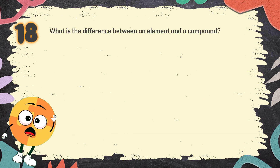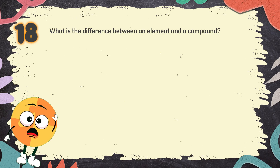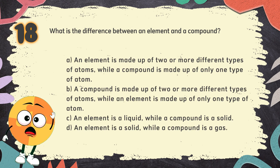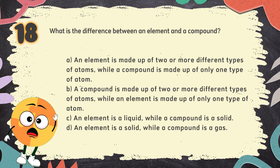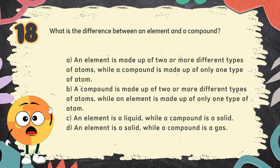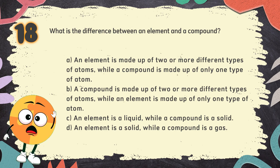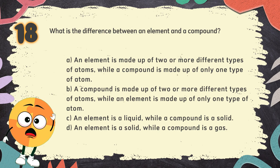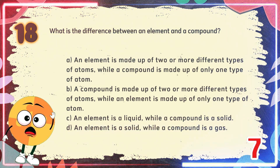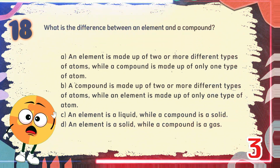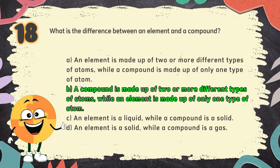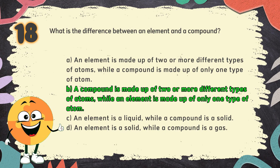Number 18. What is the difference between an element and a compound? The choices are A. An element is made up of two or more different types of atoms while a compound is made up of only one type of atom, B. A compound is made up of two or more different types of atoms while an element is made up of only one type of atom, C. An element is a liquid while a compound is a solid, D. An element is a solid while a compound is a gas. The correct answer is B. A compound is made up of two or more different types of atoms while an element is made up of only one type of atom.